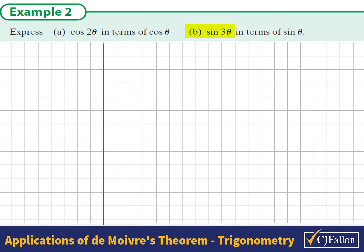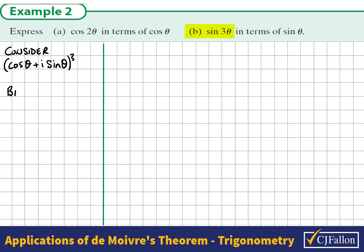In part b, we are asked to find an expression for sin3θ in terms of sinθ. This time let us consider the expansion of (cosθ + i sinθ) all to the power of 3. We could expand this by multiplying it by itself 3 times, or we could use the binomial expansion.